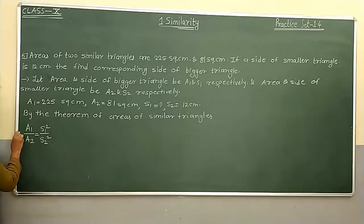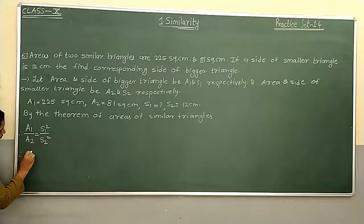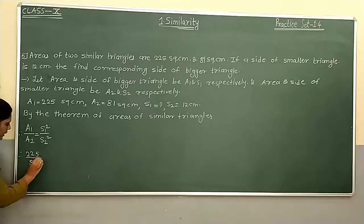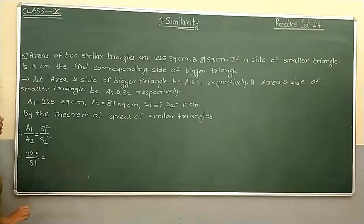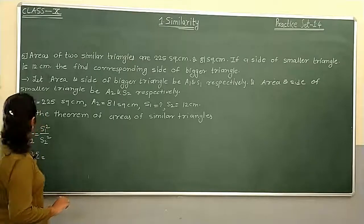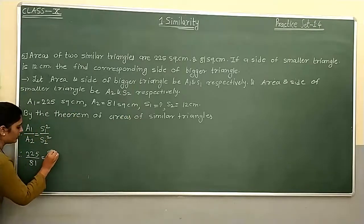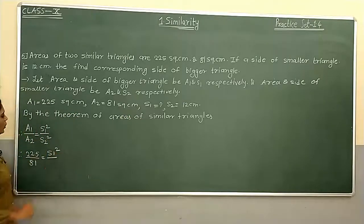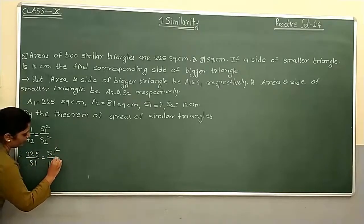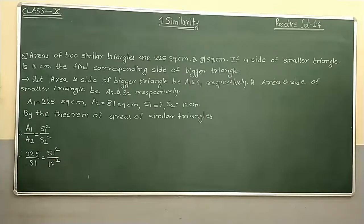A1 is 225, A2 is 81. We have to find S1. So 225 upon 81 equals S1 square upon S2 square. S2 is 12, so S2 square is 12 squared. We need to find only S1, so in the next step we will take the square root of both sides.